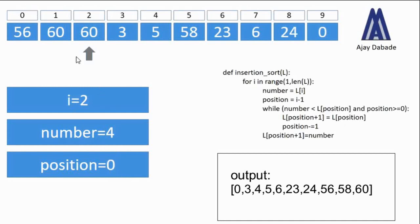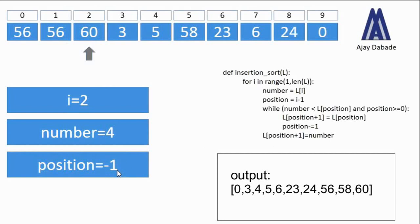The while loop runs again, comparing 4 with l[0], which is 56. Since 4 is less than 56 and position is 0 — greater than or equal to 0 — the condition is satisfied again. We copy 56 from index 0 to index 1. Position is decremented to minus 1, so the while loop terminates. Outside the loop, l[position + 1] = number places 4 at index 0. So 56 and 60 have each been shifted one position to the right, and 4 is placed at index 0 — exactly what we wanted.